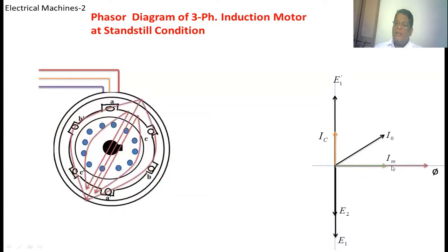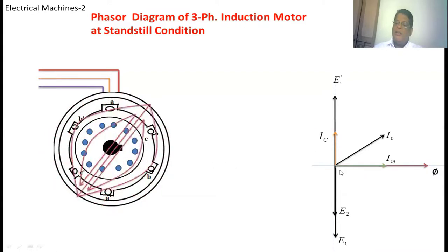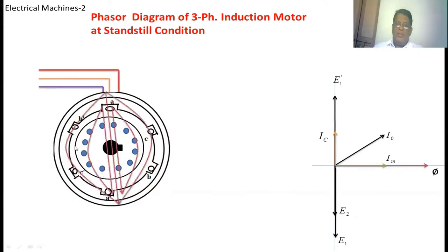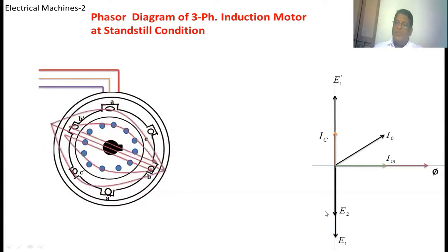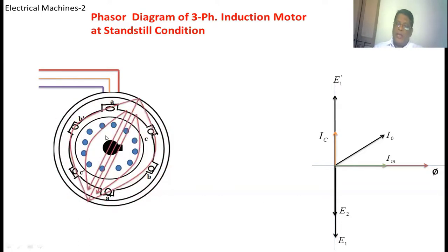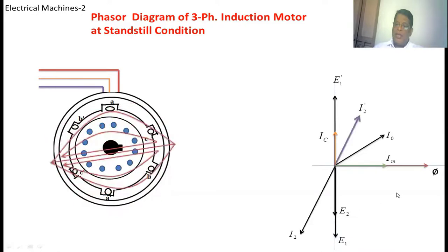Because of the magnetizing current, the rotating field is created in the induction motor. Because of the core loss current, some amount of core loss occurs. When this flux is rotating, there is a voltage E2 induced in the rotor winding. Because the rotor bars are short-circuited, this voltage drives current through the rotor bars. That current lags this voltage E2 by angle phi2. This is I2, and this angle is phi2.